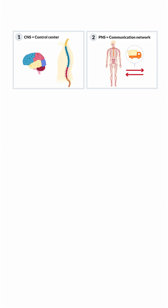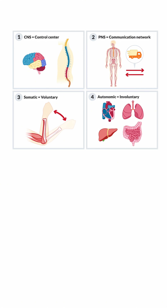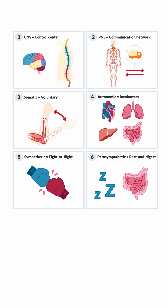As a quick recap: the CNS is the control center. The PNS is the communication network. The somatic is your voluntary control. Autonomic is that automatic, involuntary control. Then we have sympathetic — that fight-or-flight. And lastly, the parasympathetic, the rest and digest.